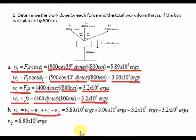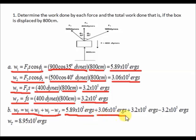So the total work W_T is equal to 5.89 × 10⁵ ergs plus 3.06 × 10⁵ ergs plus 3.2 × 10⁵ ergs minus 3.2 × 10⁵ ergs, which gives an answer of 8.95 × 10⁵ ergs.